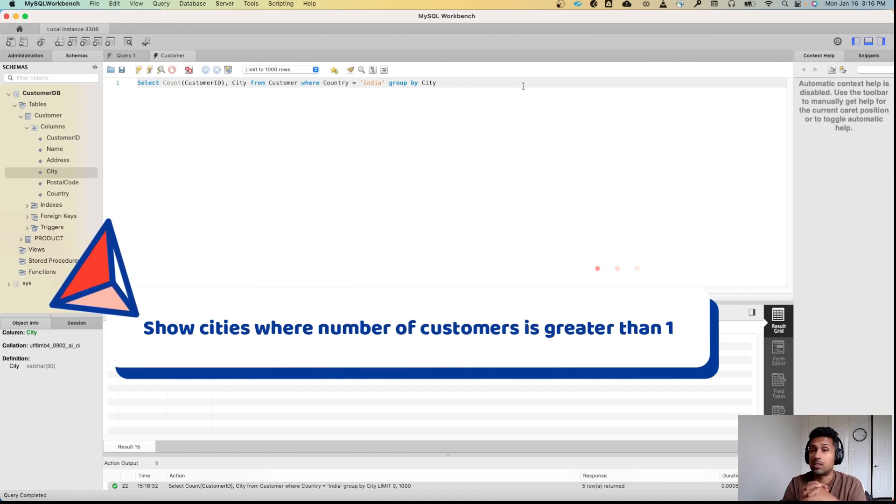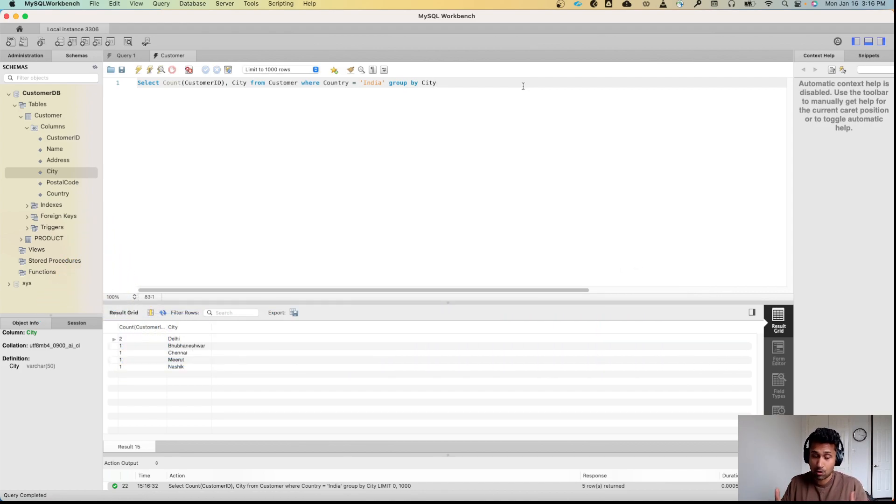So really they only want to see Delhi or any city that has number of customers greater than one. So if I were to write WHERE clause here and say WHERE COUNT(CustomerId) > 1.